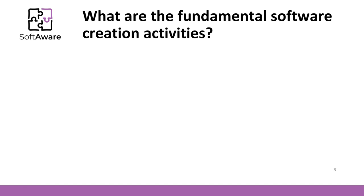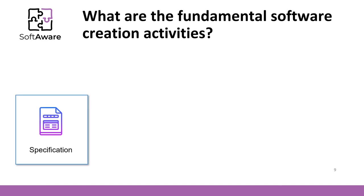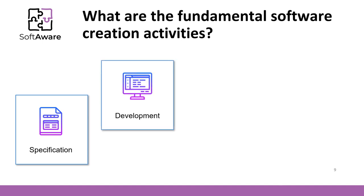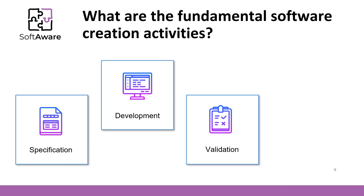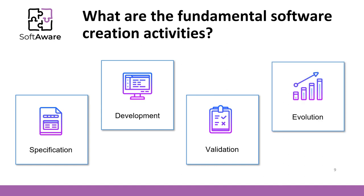Another question is: what are the fundamental software creation activities — the activities needed to perform while creating software in a disciplined way? The first activity is software specification, where customers and engineers define the software to be produced and the constraints on its operation. Then software development, during which the software is designed and programmed. Software validation, where the software is checked to ensure that it is what the customer requires. And software evolution, where software is modified to reflect changing customer and market requirements.